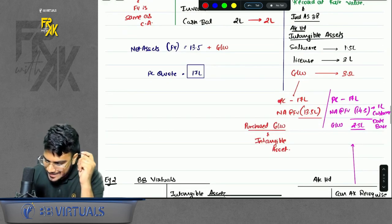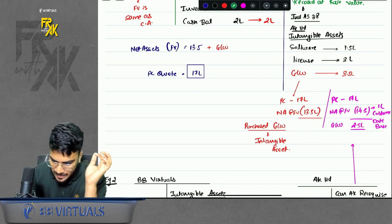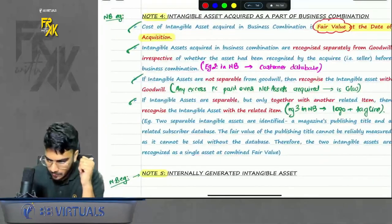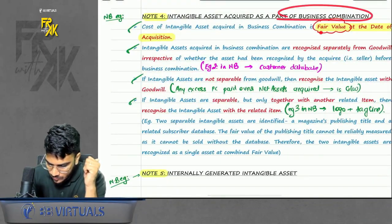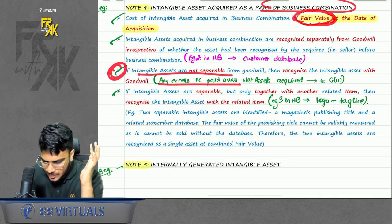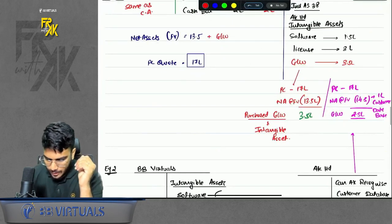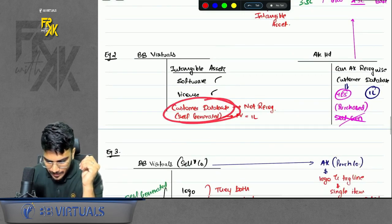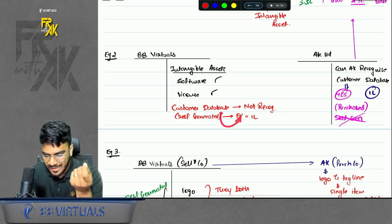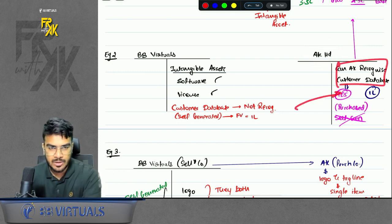Second point: whatever excess purchase consideration AK Limited is paying over and above the net assets is goodwill. Because this is purchased goodwill, we can record it as an intangible asset. One point is whatever you acquire in a business combination you will record at fair value, and whatever excess you pay over and above net assets is goodwill. Also, if there is a customer database in the selling company's books which was self-generated, it cannot be recorded there because it is prohibited — but for the acquiring company it becomes a purchased intangible, so it can be recorded.